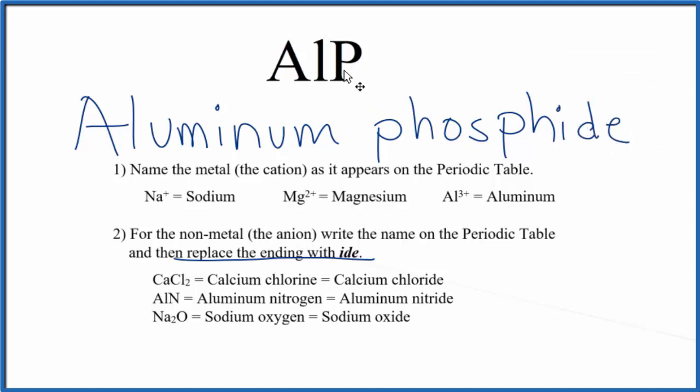So the name for ALP is aluminum phosphide. If you were given the name aluminum phosphide and asked to write the formula, you need to recognize that aluminum, when it forms ionic bonds, will have a 3 plus ionic charge.